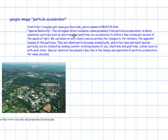Special relativity, strongest direct evidence comes probably from particle accelerators in which subatomic particles such as electrons, positrons and many many others are accelerated to within a few inches per second of the speed of light. We can observe very clearly and accurately changes in for instance the apparent masses of the particles as well as the time they take to go around and the distance that they actually travel.